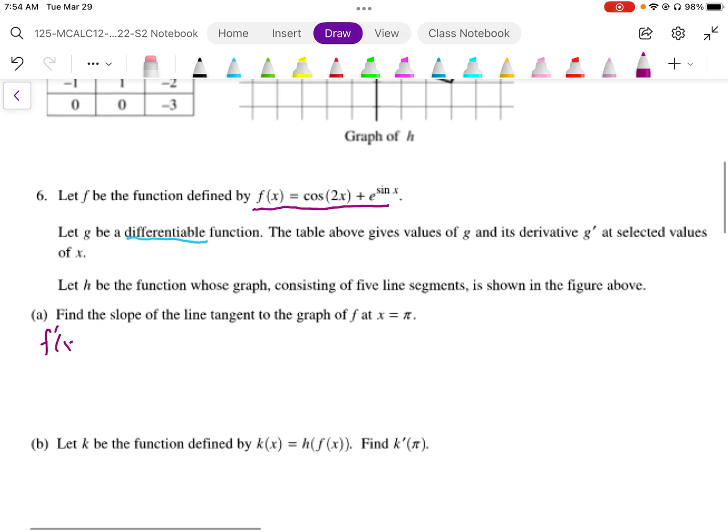So we're just going to differentiate F and the derivative of cos is going to be negative sine. Because of the times two we apply the chain rule and plus the derivative of e is e. And then because of the sine with the embedded sine we're going to use a chain rule and multiply by cos x. So it looks like this: negative 2 sine 2x plus e to the sine x cos x.